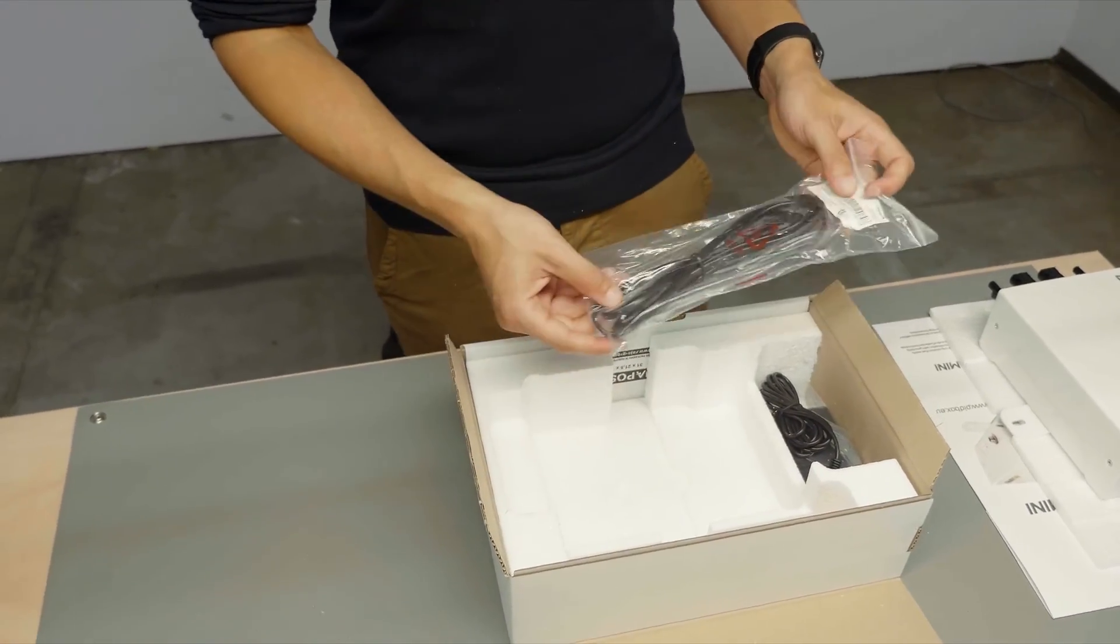Here we have an AC cable and the power supply. The power supply connects directly to the Pitbox Mini, and then the AC cable connects to the power supply, which can then be plugged in.